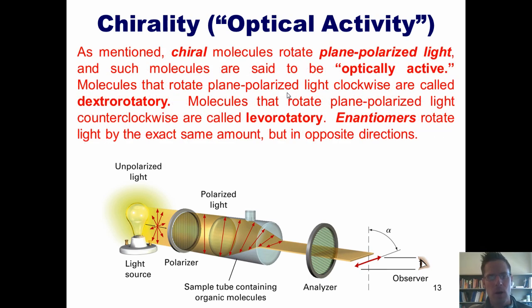As mentioned, chiral molecules rotate plane polarized light, and such molecules are said to be optically active. Molecules that rotate plane polarized light clockwise are called dextrorotatory. Molecules that rotate plane polarized light counterclockwise are called levorotatory.